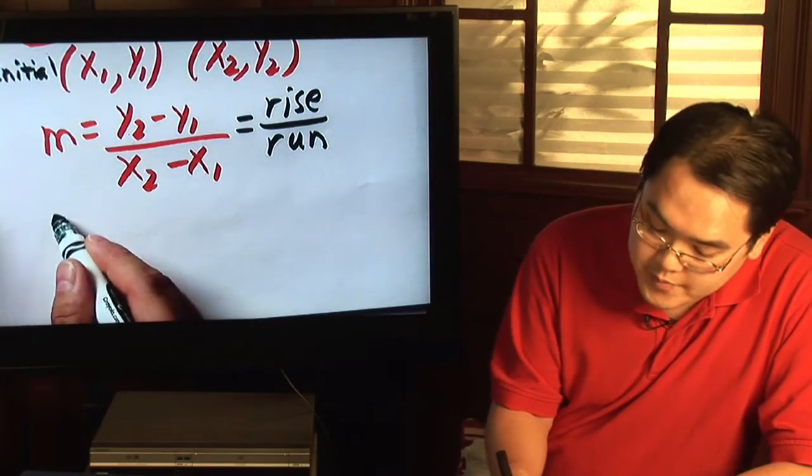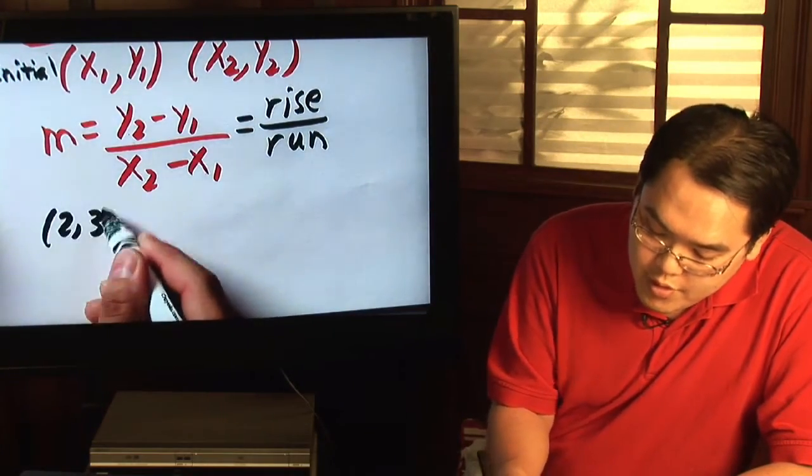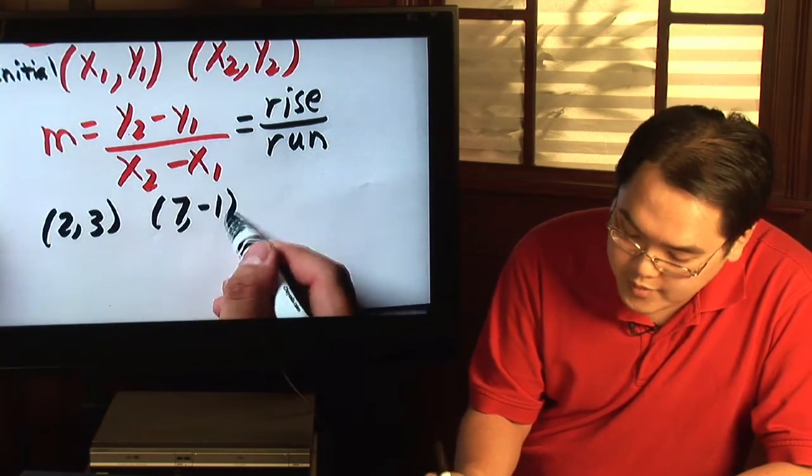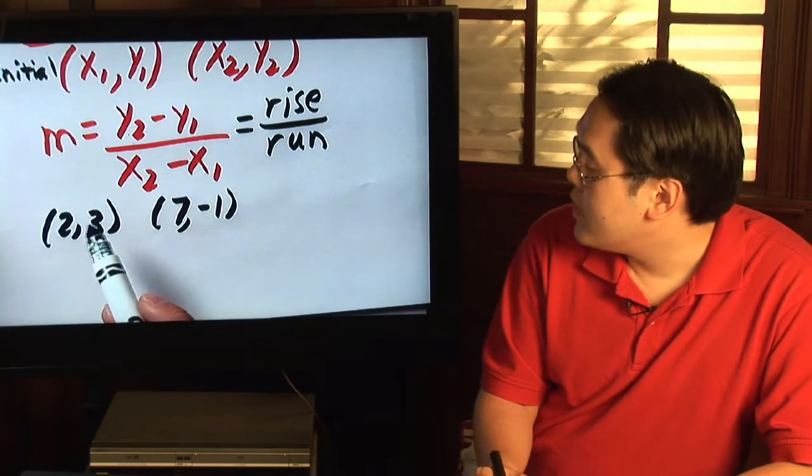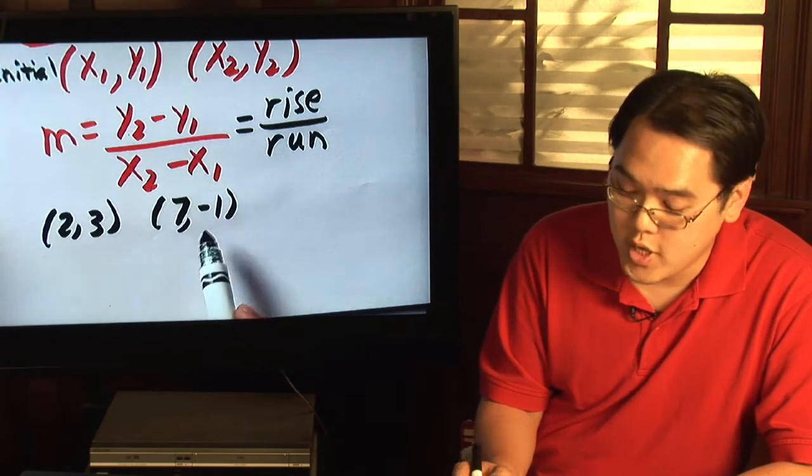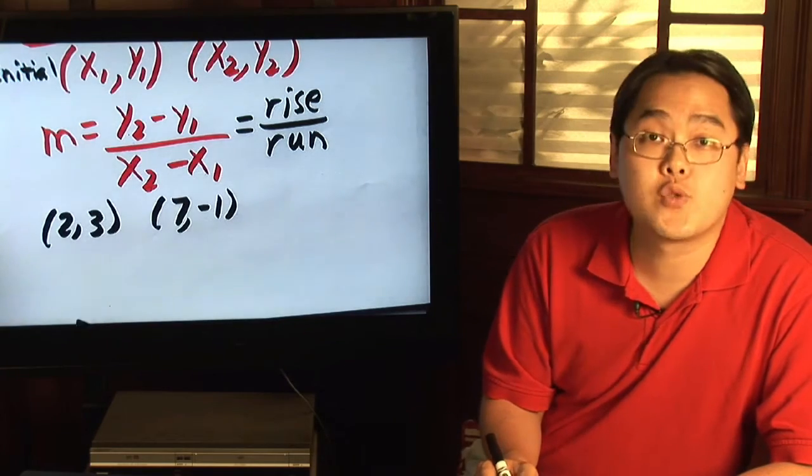Suppose you have two points, 2, 3, and 7, negative 1. Now, the 2, 3 is your initial and 7, negative 1 is your terminal. Basically, just plug in the formula like it's written and you'll be good to go.